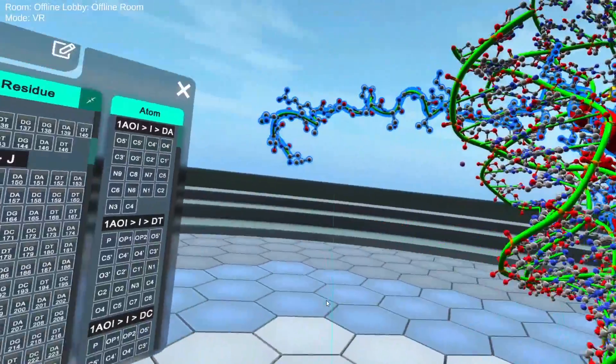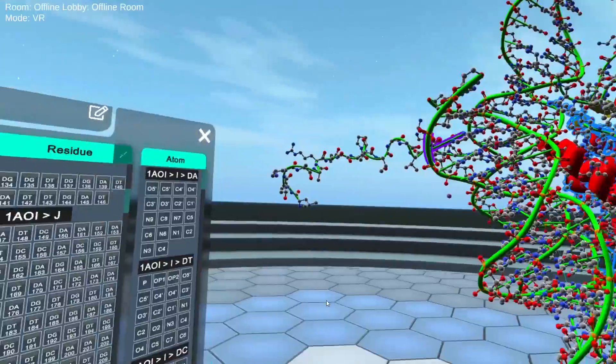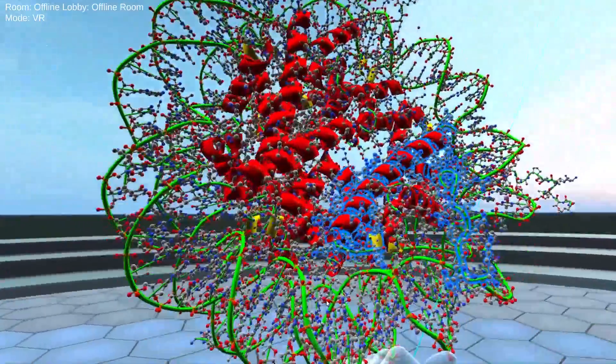There are slight differences like this one has this section projecting outwards. But on the whole, they're very similar and they form this octomeric disc.